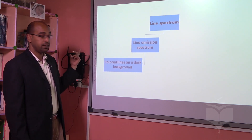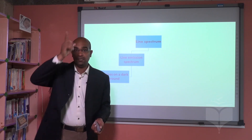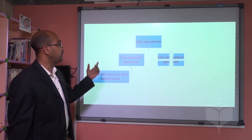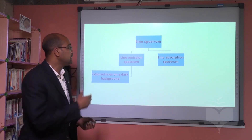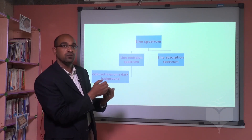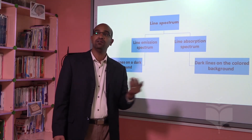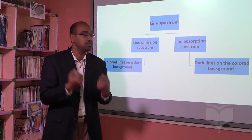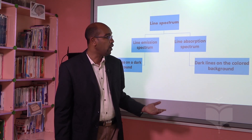We call it line emission because we find colored lines on a completely black or dark background. The second part of the line spectrum is called line absorption. Line absorption means that when we give a chemical element a continuous spectrum, it cannot absorb all of it — it will absorb just part of it. This absorbed part will appear as dark lines on the colored background.